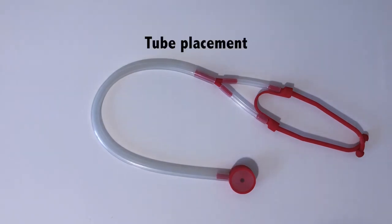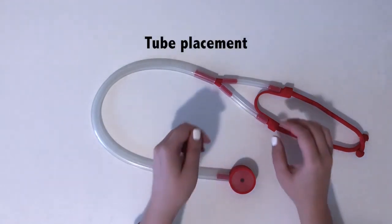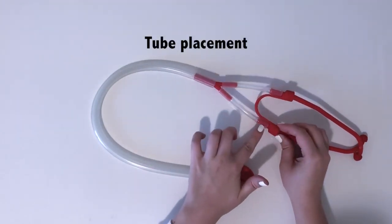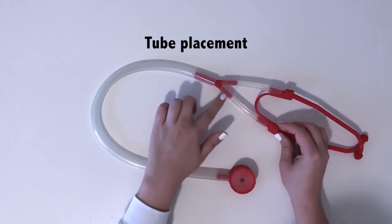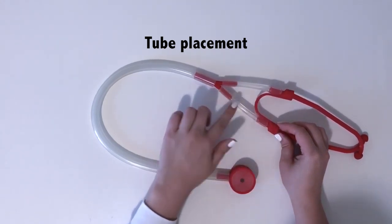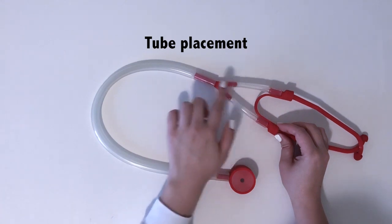Another common issue is with the tube placement. Make sure your tubes are at the appropriate height and equal on both sides. This is what your tube should look like on the ear pieces and the Y piece.